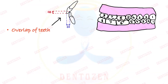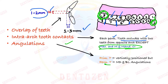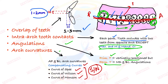Characteristics of permanent dentition include: overjet — horizontal distance of 1 to 3 mm; overbite — vertical overlap of 1 to 2 mm; intra-arch tooth contacts within the same arch; and each permanent tooth occludes with two permanent teeth from the opposite arch. Exceptions are the maxillary third molar and mandibular central incisor, which contact only one tooth from the opposite arch. Permanent teeth show mesiodistal as well as buccolingual angulations. Three compensating curves are seen — curve of Spee, curve of Wilson, and curve of Monson.